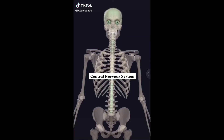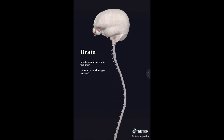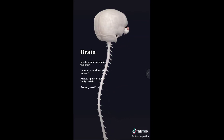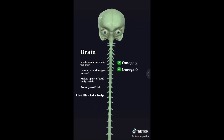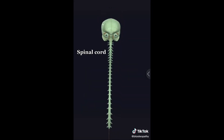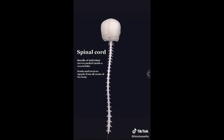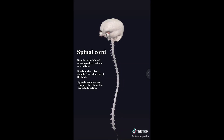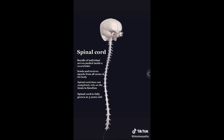The central nervous system consists of the brain and the spinal cord. The brain, being the most complex organ in the body, uses 20% of the oxygen you inhale. It makes up 2% of your total body weight and is nearly 60% fat — this is why healthy fats such as omega-3 and omega-6 are vital for brain health, helping reduce inflammation and improve immune function. The spinal cord is not one unified cord but a bundle of individual nerves packed together in a long tube that sends and receives signals from all areas of the body. The spinal cord does not take all commands from the brain — it can send signals directly to muscles, as in reflexes. The spinal cord stops growing once you turn 5 years old.